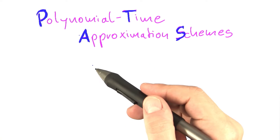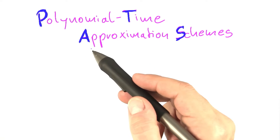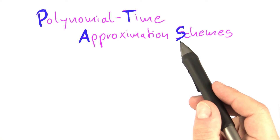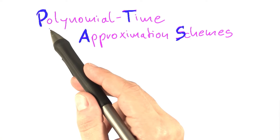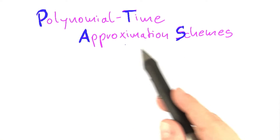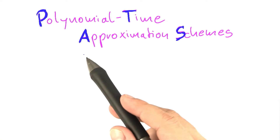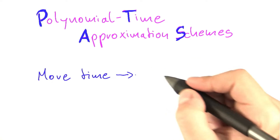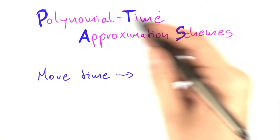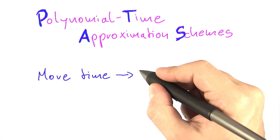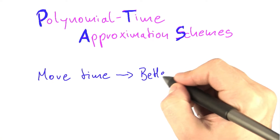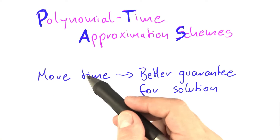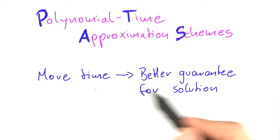While for some problems there's no constant factor approximation algorithm unless P equals NP, or there are constant factor approximation algorithms but with known limits on how good that constant factor can get, there are other problems that allow for what is called a polynomial time approximation scheme. The idea behind a polynomial time approximation scheme is that if you put in more running time into your algorithm, you will get a better solution or a better guarantee for your solution. And depending on how good you want that guarantee to be, there are certain implications for the running time you have to put in.